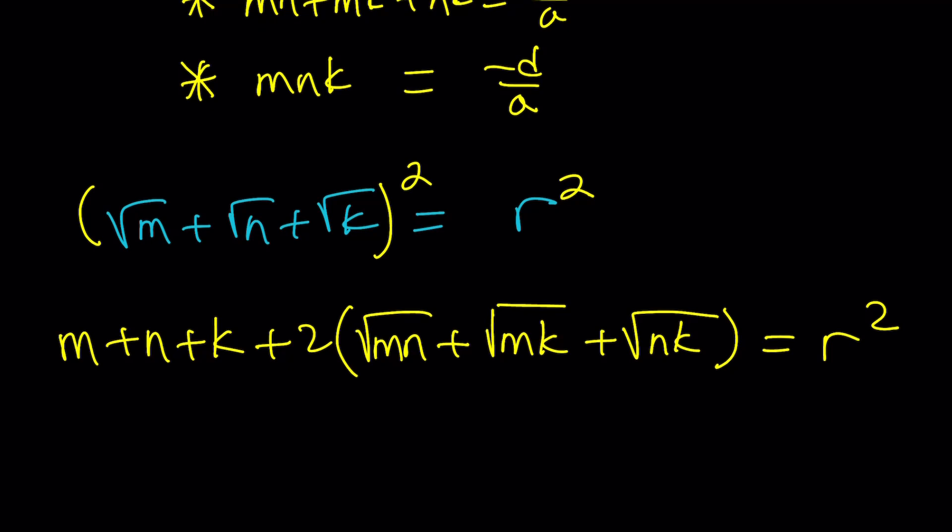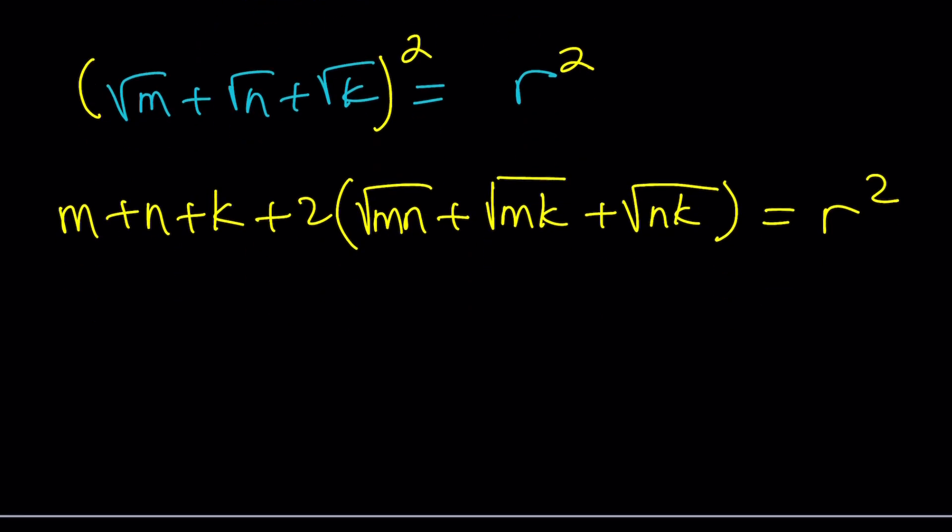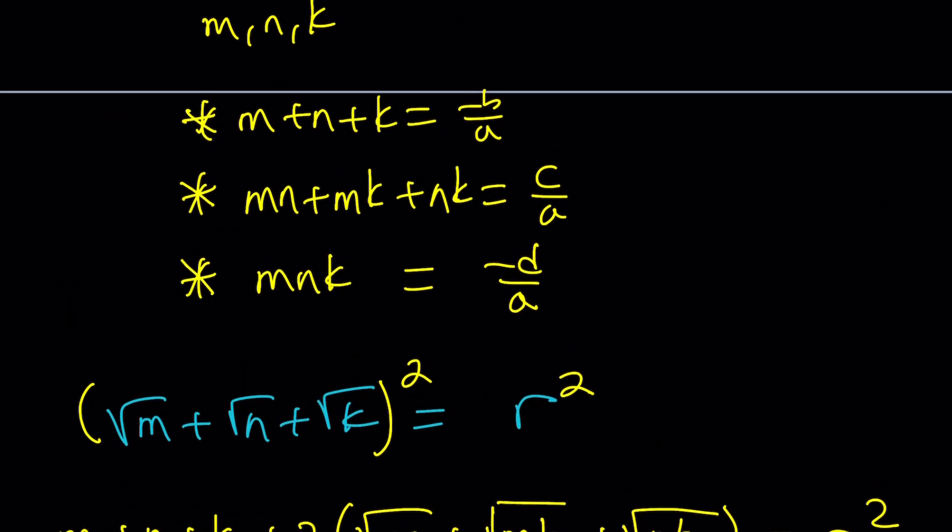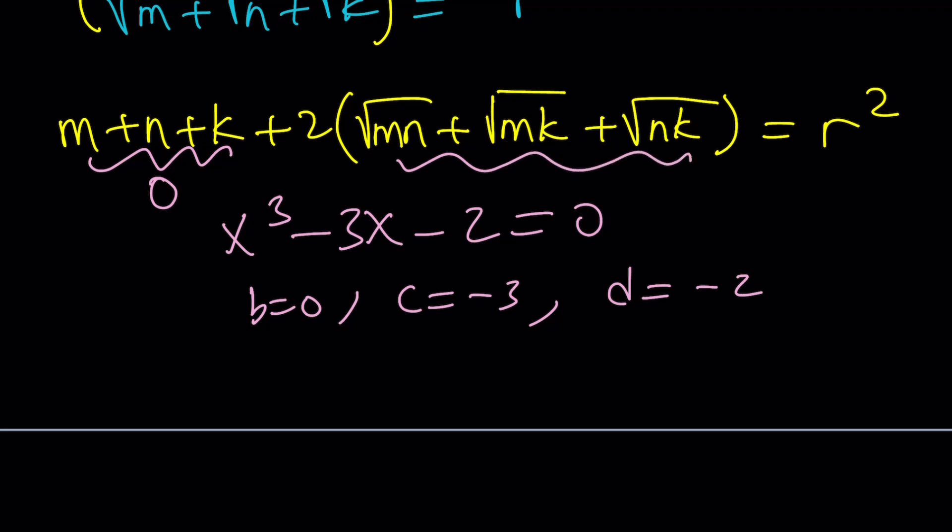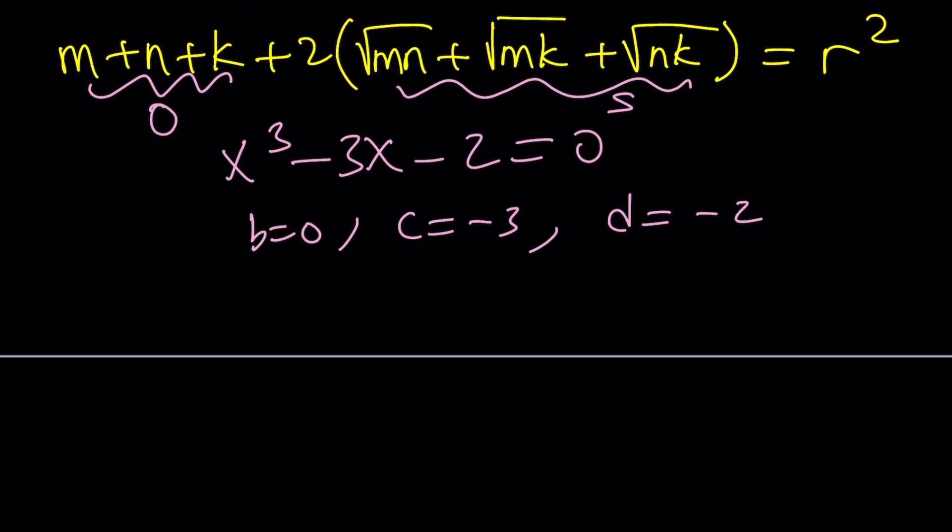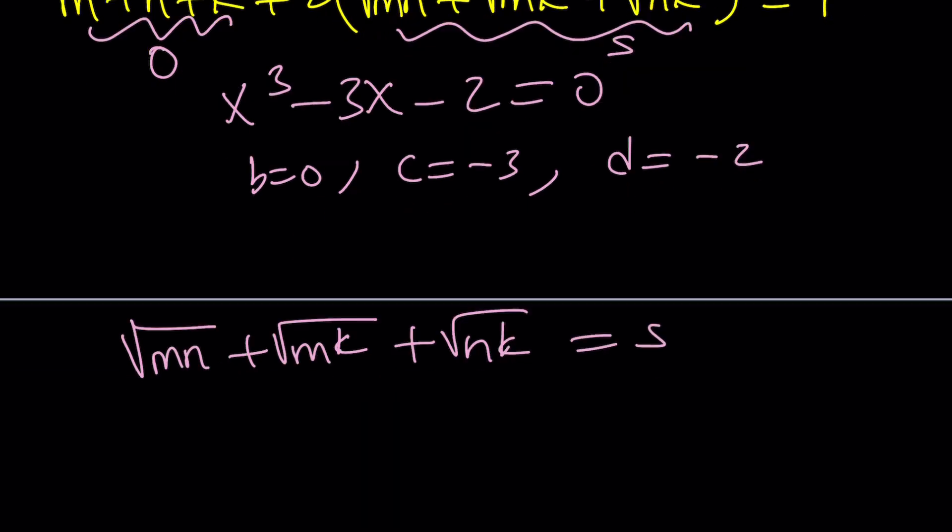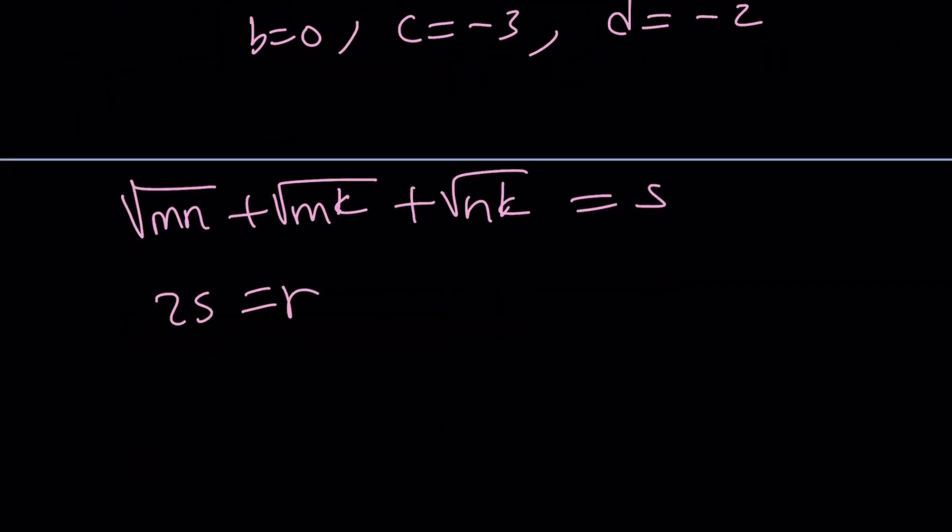We have three terms, so that's a trinomial. If you square each one, m, n, k, and then plus two times, you're going to be basically multiplying these two at a time. And of course they're under the radicals, and that equals r². Remember, we're trying to solve for r. What is m + n + k? Now remember, our equation written in complete cubic form is x³ - 3x - 2 = 0. Notice that the x² is missing, which means b is 0, c is -3, and d is -2. Since b is 0, the sum is also 0 because it's 0/a. So this is 0. Nice.